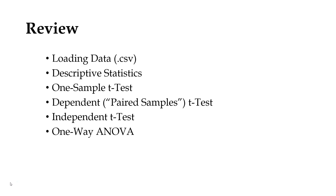Then we looked at applying the kinds of statistical tests we've learned so far. We did a one-sample t-test where we compared the mean of our sample to some comparison number to see if there was a significant difference. Then a dependent or paired samples t-test to compare two means against one another, then an independent t-test to compare means from two different groups, and a one-way ANOVA to compare means for more than two groups.